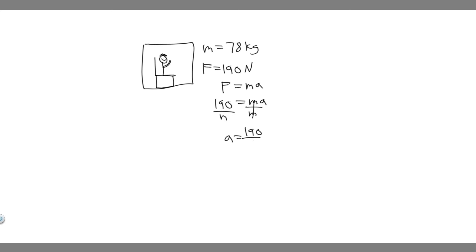So it's just going to be equal to 190 over 78, which is 2.43589, and so on. I'm just going to round to 2.4. You can round however you want, but 2.4, and then it's going to be meters per second squared. That's what we measure acceleration in.